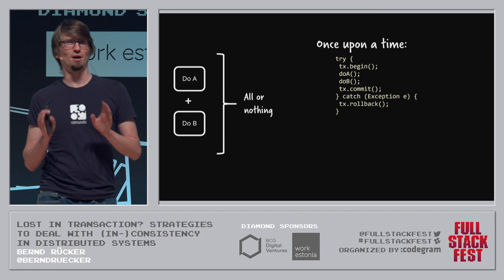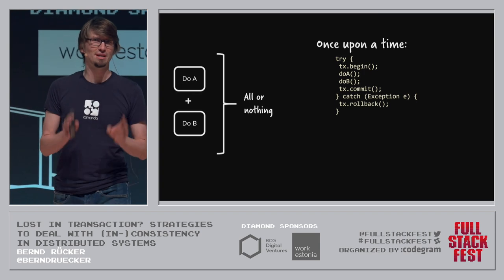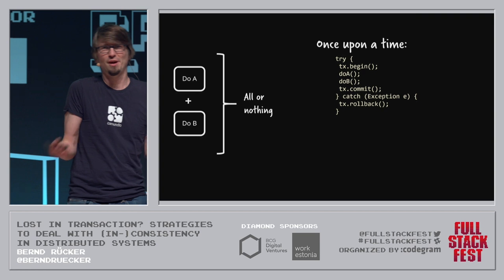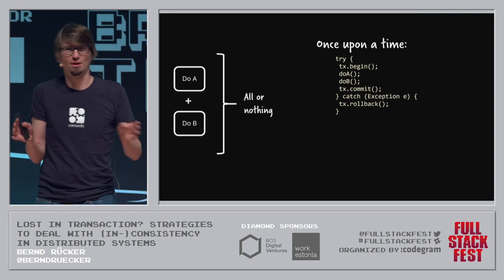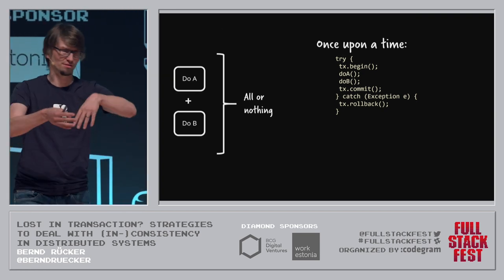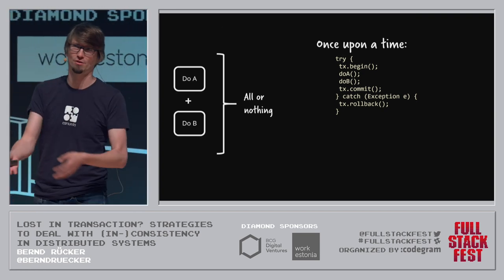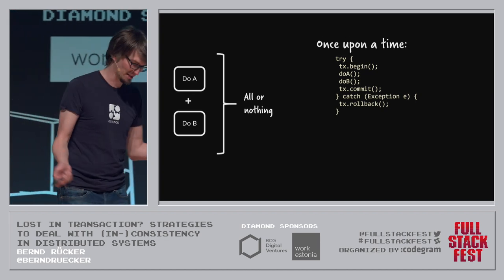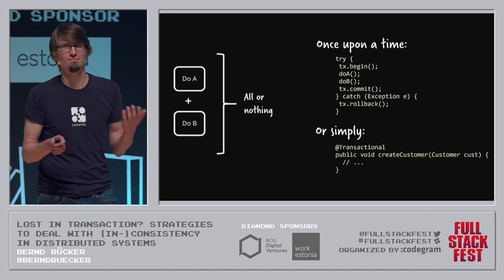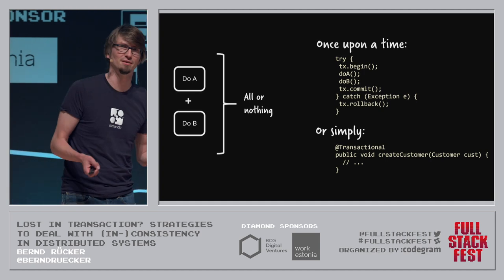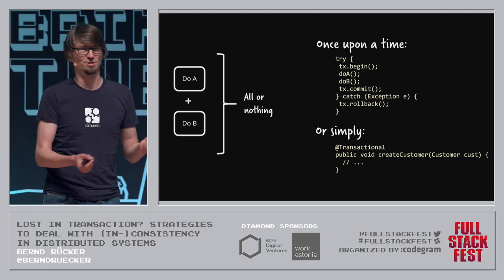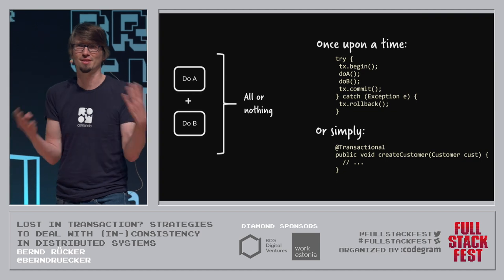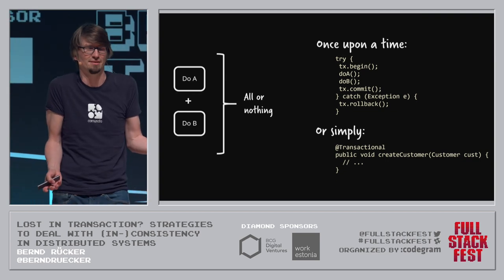Once upon a time, this was pretty easy. We just wrote using a transaction manager. Depending on the language, it looked more or less like this: we start a transaction, we do stuff, we commit it, or if we have a failure, we roll it back. Depending on the technology, you might have it even easier — in Java, you can just add @Transactional and then everything is transactional. That seems very easy.